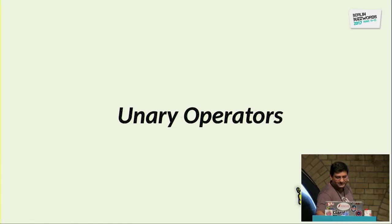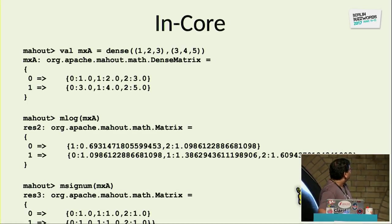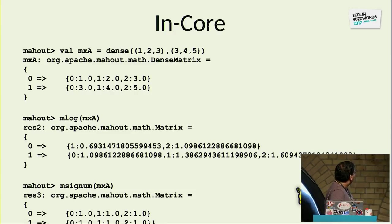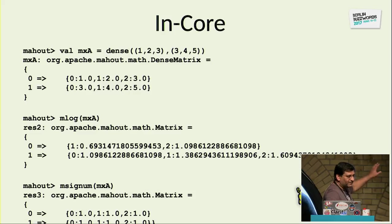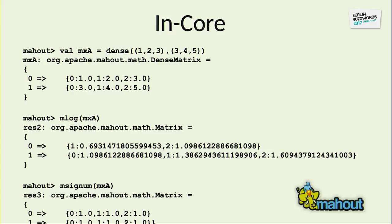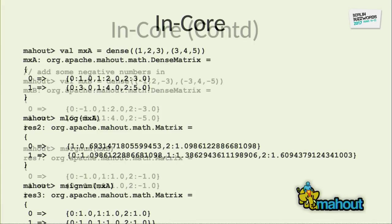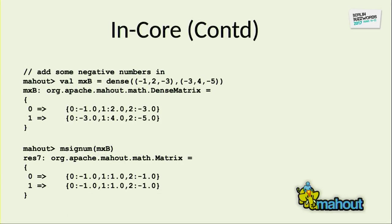We also have unary operators. For example, you define a dense matrix — that's all it takes — and you can calculate the log of an in-memory matrix with a single call. Signum returns 1 if the value is greater than 0 and 0 if it is less than 0. We also have a Mahout Spark REPL, just like the Spark REPL, where you can run these operations interactively.